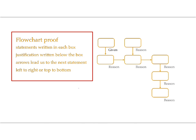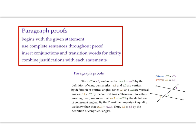In your notes, write these four statements for flowchart proofs and do a rough sketch of the example. Basically, flowchart proofs have statements written in each box, justifications written below the box, and arrows leading to the next statement — usually arranged left to right or top to bottom. For paragraph proofs, they begin with the given statement, use complete sentences throughout, insert conjunctions and transition words for clarity, and combine justifications with each statement.